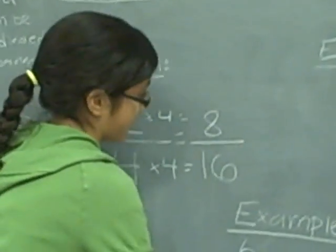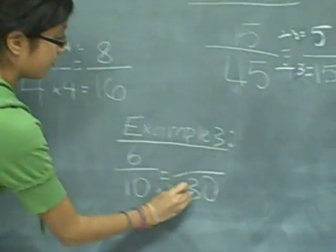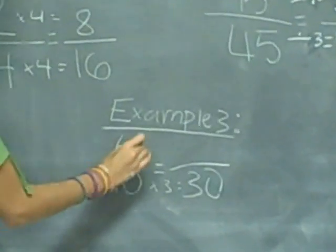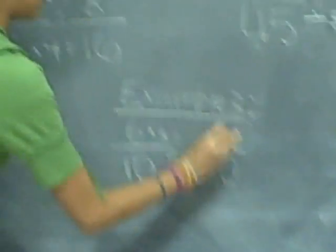And for example three, we do the same thing. Six tenths times 3, which equals 30, and then do the same thing to the numerator, which equals 18.